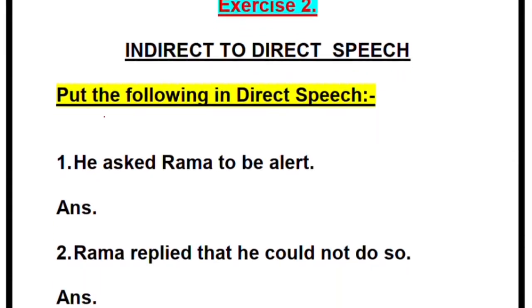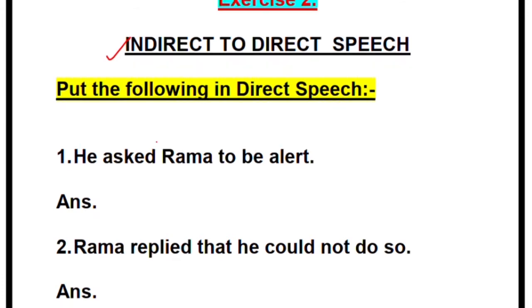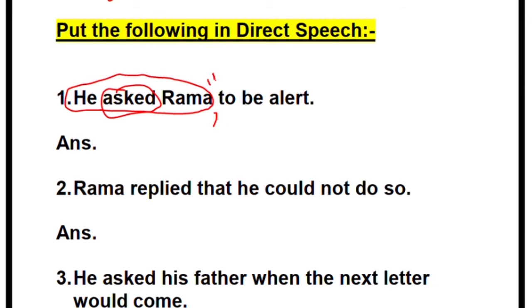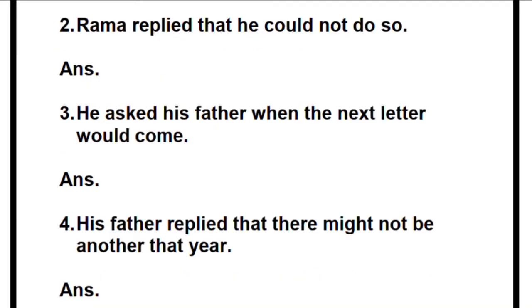We now move to the second exercise — this is a new one for today. We are changing indirect to direct speech, the opposite way around. First one: 'He asked Rama.' In the part before the quotation, write 'he said to Rama.' Add a comma, open the quotes, and the first word starts with a capital letter. Since this is an order, remove the 'to' we added earlier. Start with capital B: 'Be alert.' Close quotation.